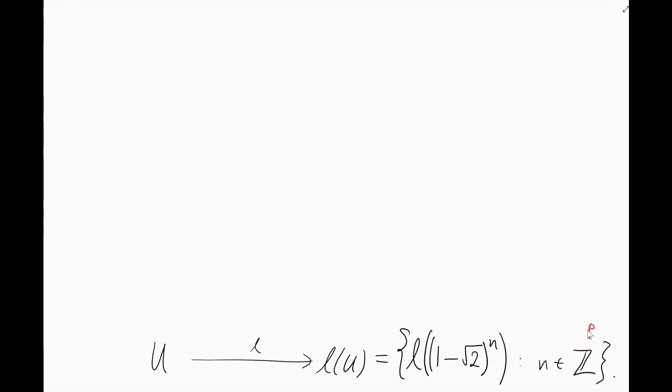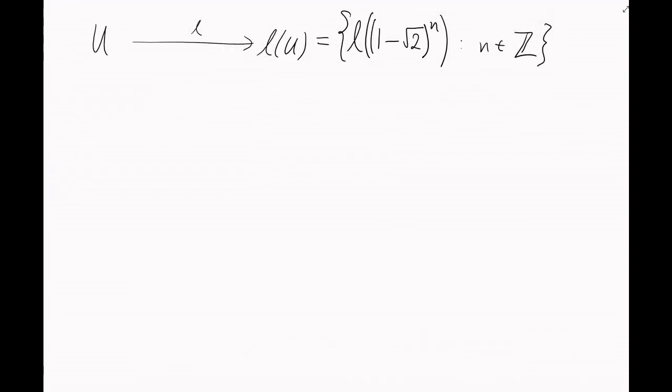Okay, well, we're almost there. How can I convert this information back out of logarithm space? Now that I know what L of u looks like, how can I work out what u looks like?